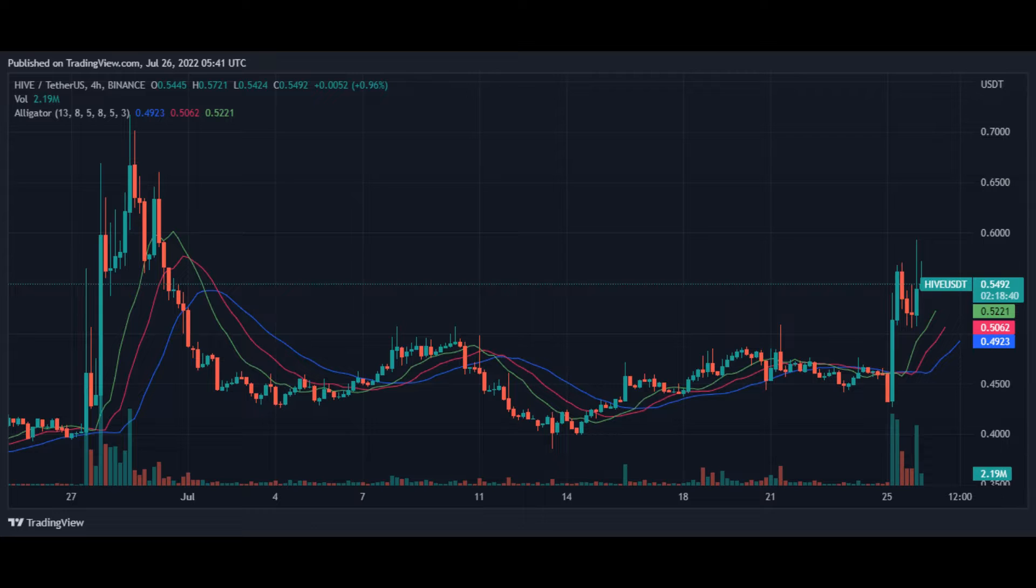Williams Alligator Indicator is a technical analysis tool that uses the smooth changes in three moving averages to deduce trading signals. The blue, red, and green-colored curves in the Hive chart above represent the jaw, teeth, and lips respectively. Since the jaw is wide apart from the lips and the three moving averages are below the recently formed candlestick in the chart above, the price of Hive might continue with its recent bullish run.